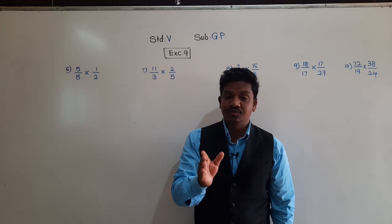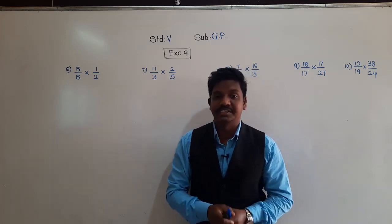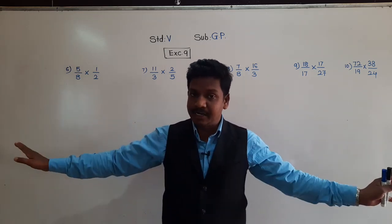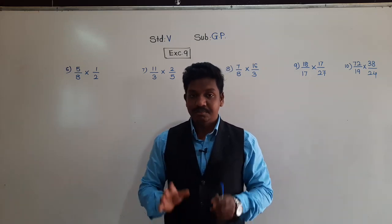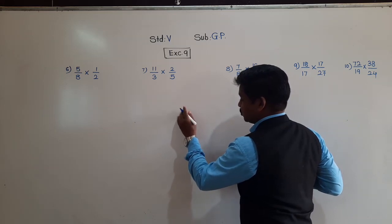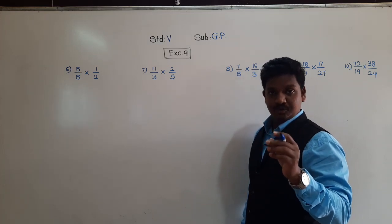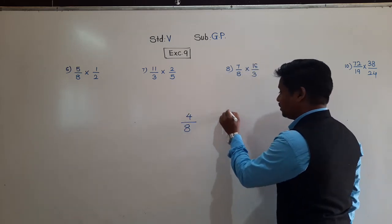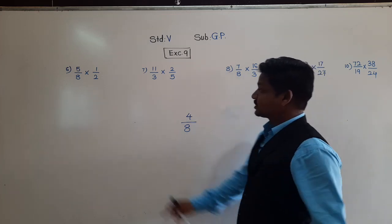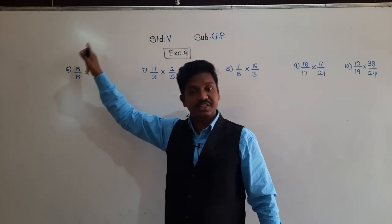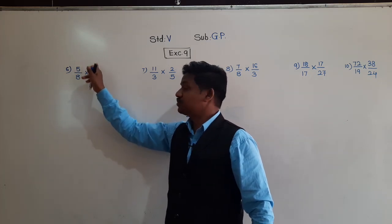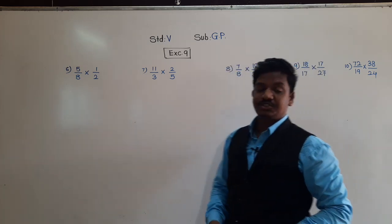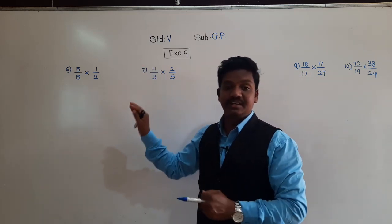Multiplication and division of fractions work together, because each fraction itself contains division — 5 upon 8 means 5 divided by 8, 1 upon 2 means 1 divided by 2. So whenever we do multiplication of fractions, division is already present. Multiplication and division are not two separate operations for fractions — they go together.